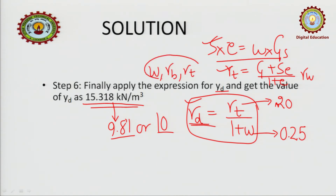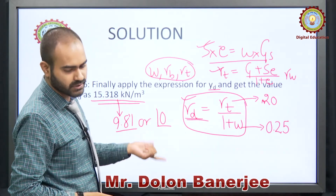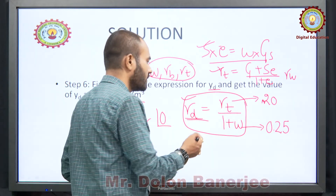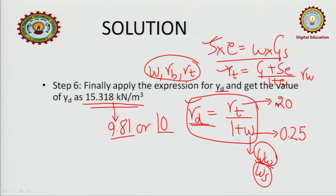This is the use of formulas — we can derive parameters from different expressions. In some questions you also have to use physical meanings. For example, you may need to find w as the ratio of weight of water to weight of soil solids. This is numerically based, but let us now see a physically based problem.